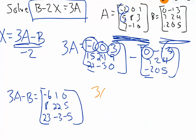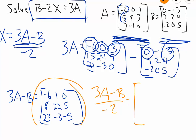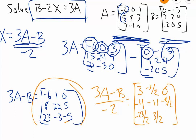To get our final answer — 3A minus B over negative 2 — we take everything in 3A minus B and divide by negative 2. Negative 6 divided by negative 2 is 3. 1 divided by negative 2 is negative one-half. 0 divided by negative 2 is 0. 8 divided by negative 2 is negative 4. 22 divided by negative 2 is negative 11. Then we get negative five-halves, negative twenty-three-halves, positive three-halves, and positive five-halves. This matrix right here is the solution to that matrix equation.